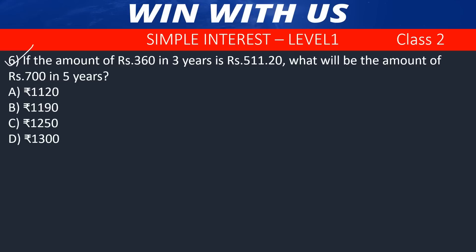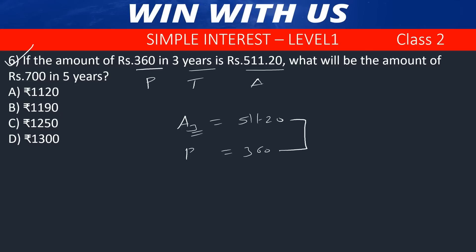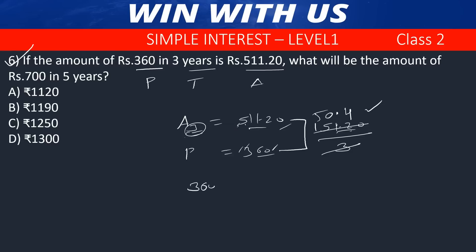Question number 6. If the amount of 360 rupees in 3 years is 511.20 — meaning principal is 360, time is 3 years, and amount is 511.20. The interest = 511.20 minus 360 = 151.20. This is 3 years' interest, so 1-year interest = 151.20 divided by 3 = 50.40.